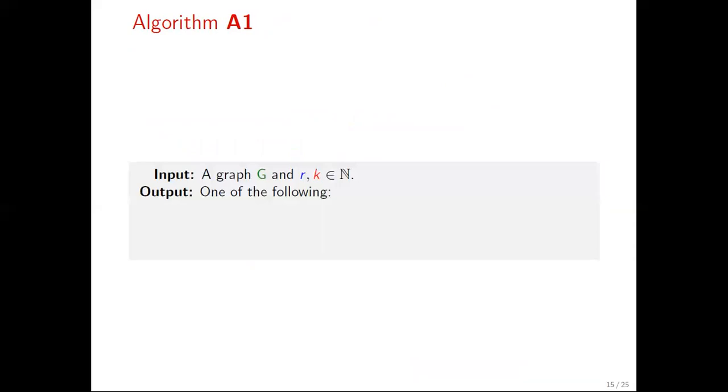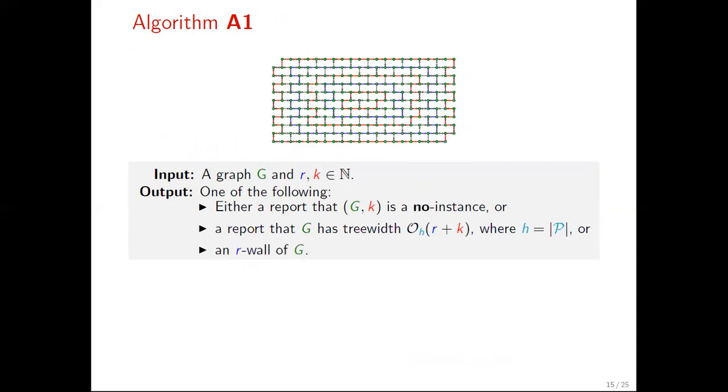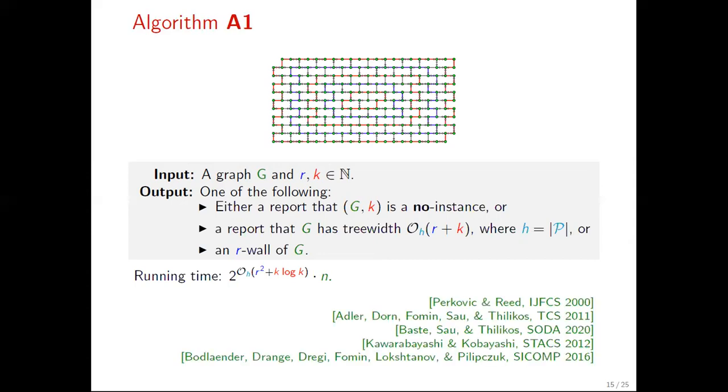In what follows, we describe the series of algorithms that are subroutines of our general algorithm, aiming to reduce to the bounded treewidth case. We begin with algorithm A1. Given a graph G and two non-negative integers r and k, algorithm A1 outputs either a report that we deal with a no instance, or a report that the treewidth of G is linear in terms of r and k, or an r-wall of G. A wall is a graph as shown above, a grid-like graph where its bricks, the cycles surrounding the faces inside the wall, can be subdivided arbitrarily. The running time of this algorithm is single exponential in r^2 and k log k and linear in n, the size of the input graph. In fact, this algorithm is a creative combination of a number of results in the literature. Applying this algorithm for inputs that we know a priori have big treewidth and are yes instances, we will assume that it outputs always the third case, the wall.